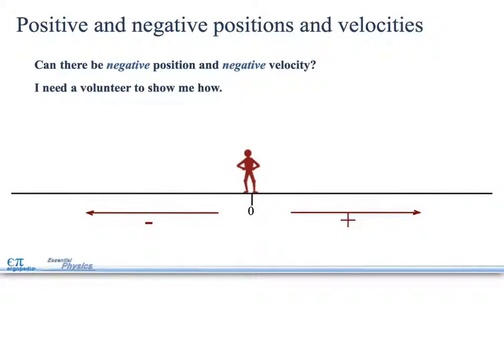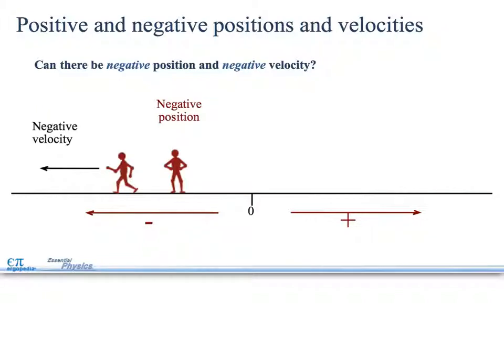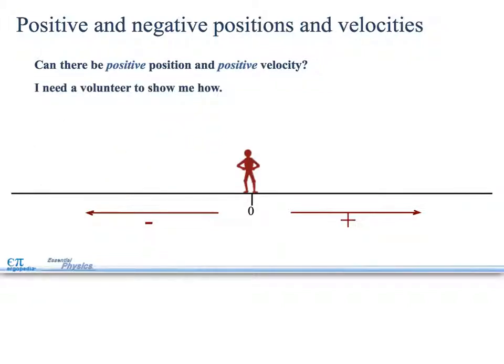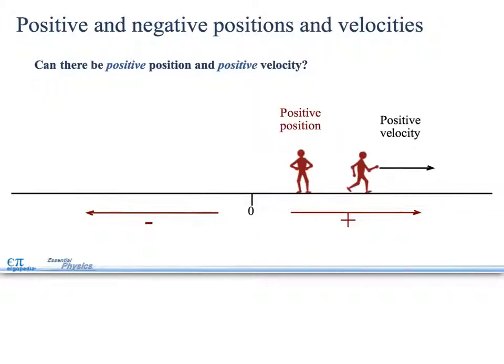Can there be negative position and negative velocity? Negative position, negative velocity. It's moving in the negative position and moving in the negative velocity. They're both going the same direction. Can there be positive position and positive velocity? So, now they're both heading in the positive position and having positive velocity.